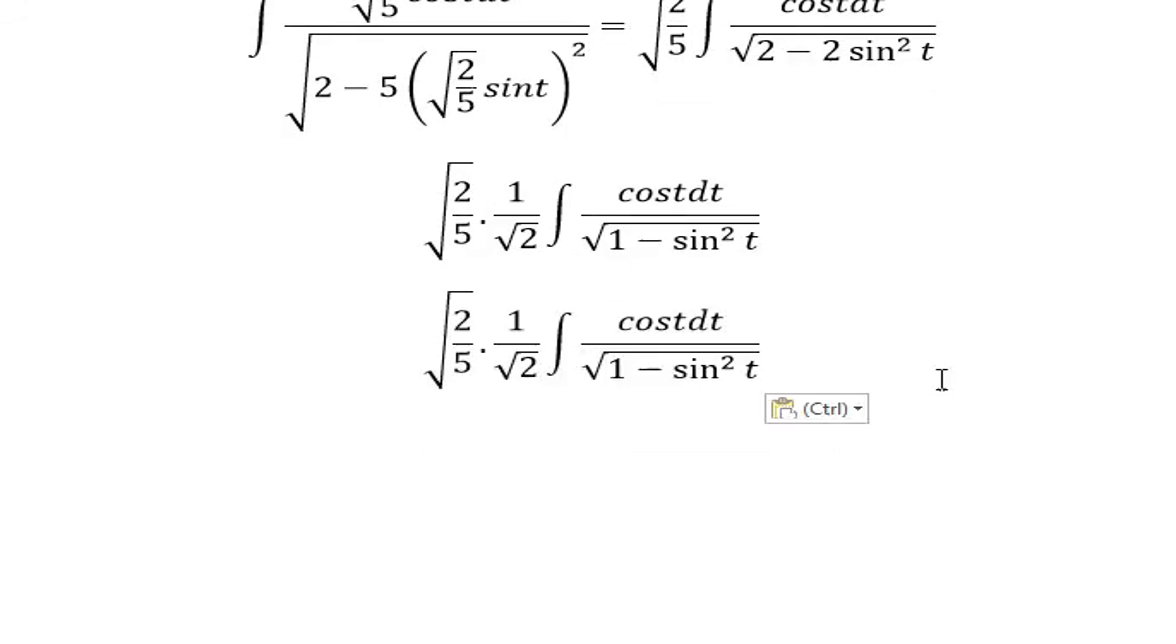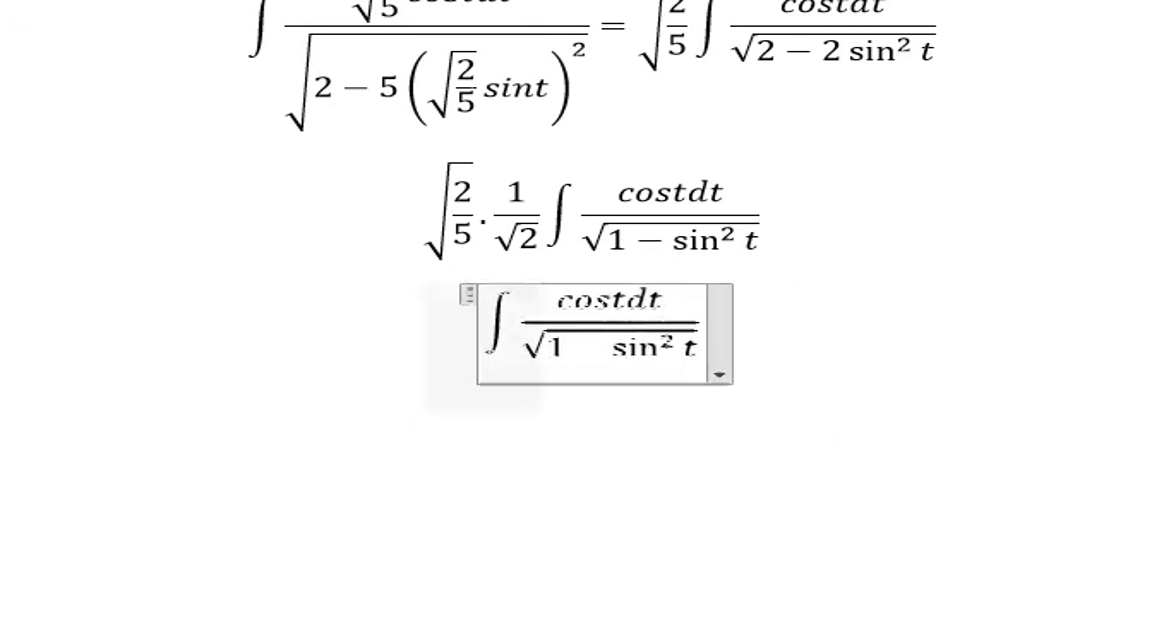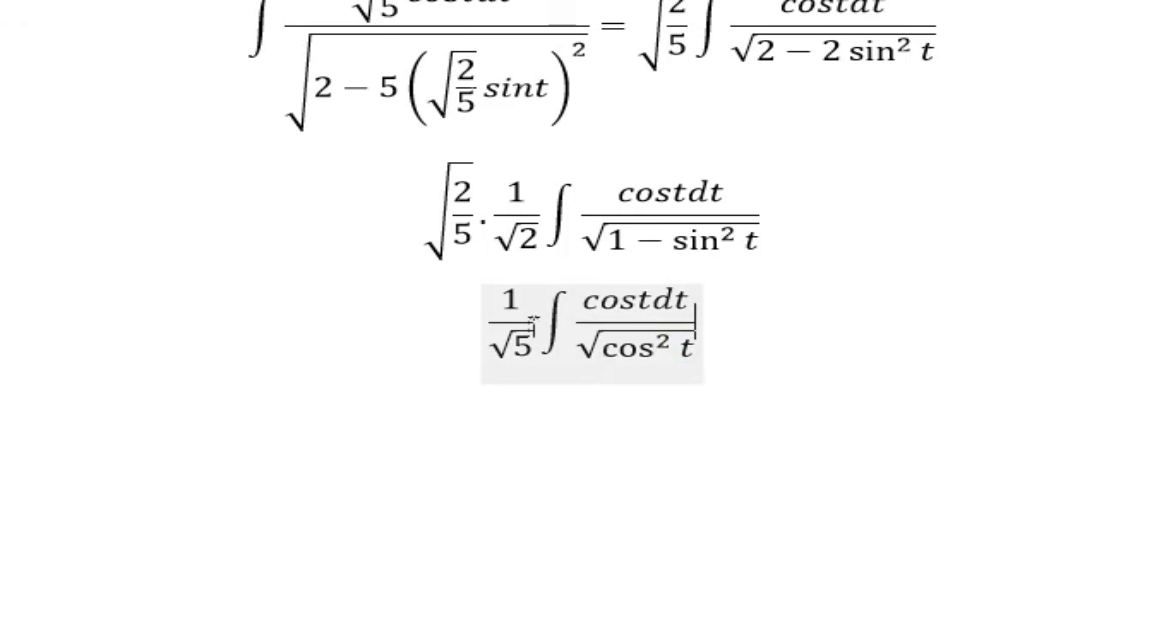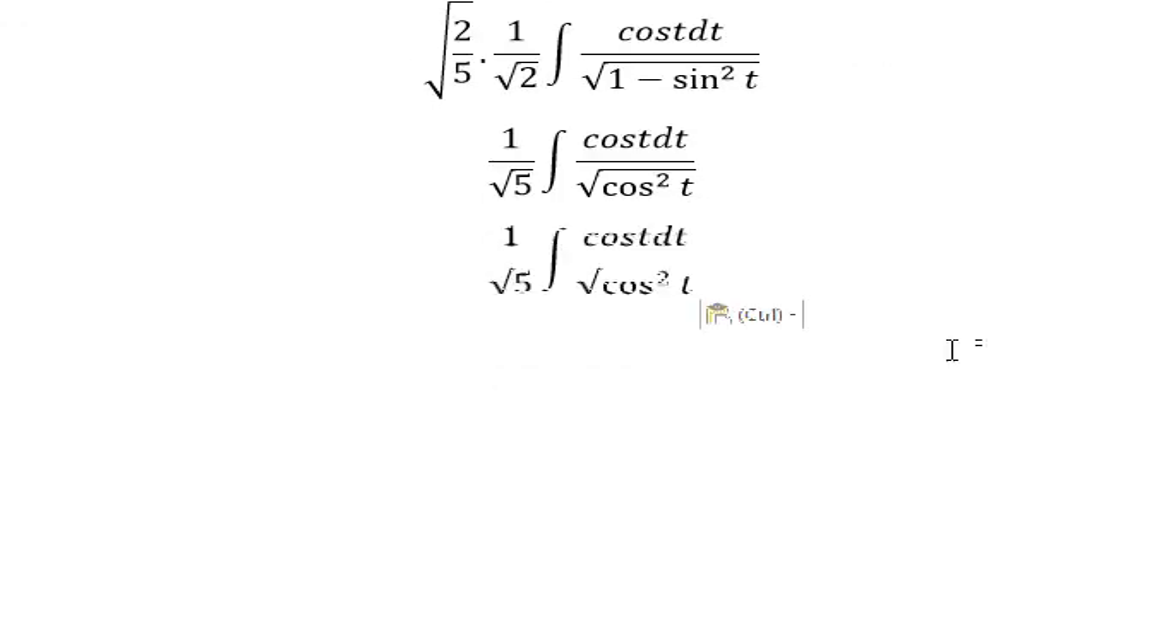The next one. Square root 2 in the numerator and square root 2 in the denominator, they eliminate together. Now you got 1 over square root 5. This one will convert to cos squared t. They will destroy the square root, and you have cos t.